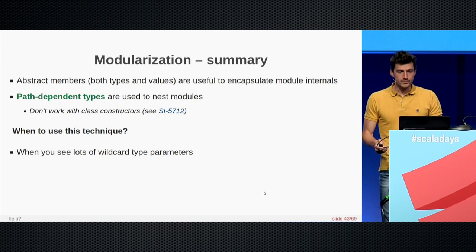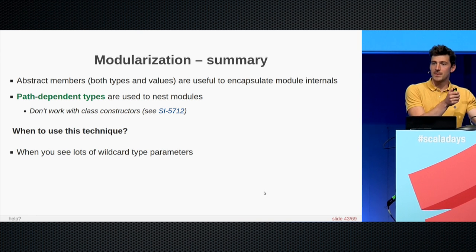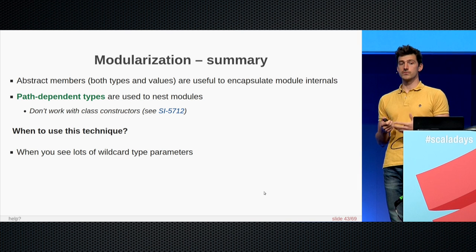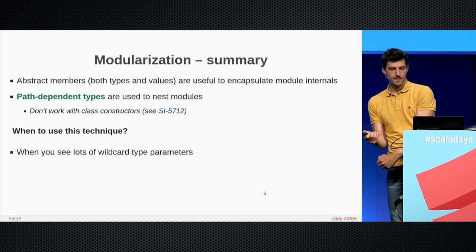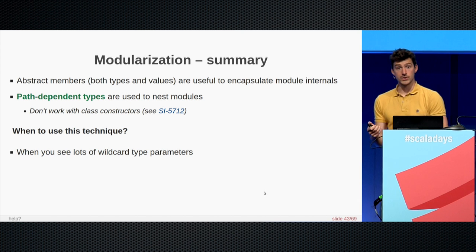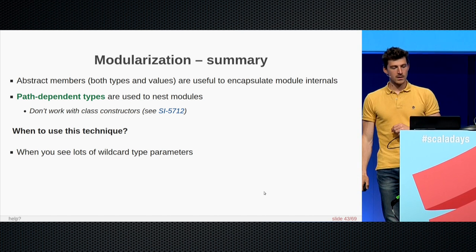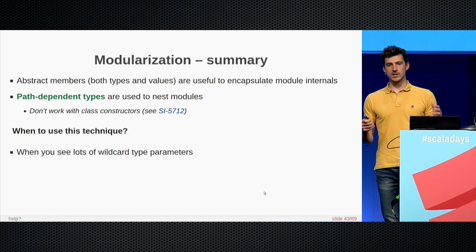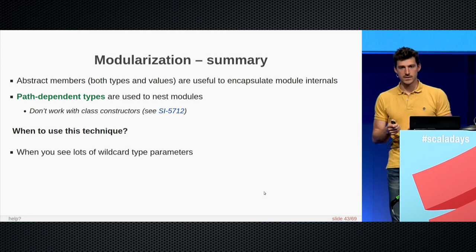To sum up this section: abstract members — both abstract methods and abstract type members — are useful to encapsulate module internals. Path-dependent types are useful to nest these modules together. When should you use this technique? Basically, if you see lots of wildcard types in your code, that's a good sign you should try to model your problem with abstract members instead.